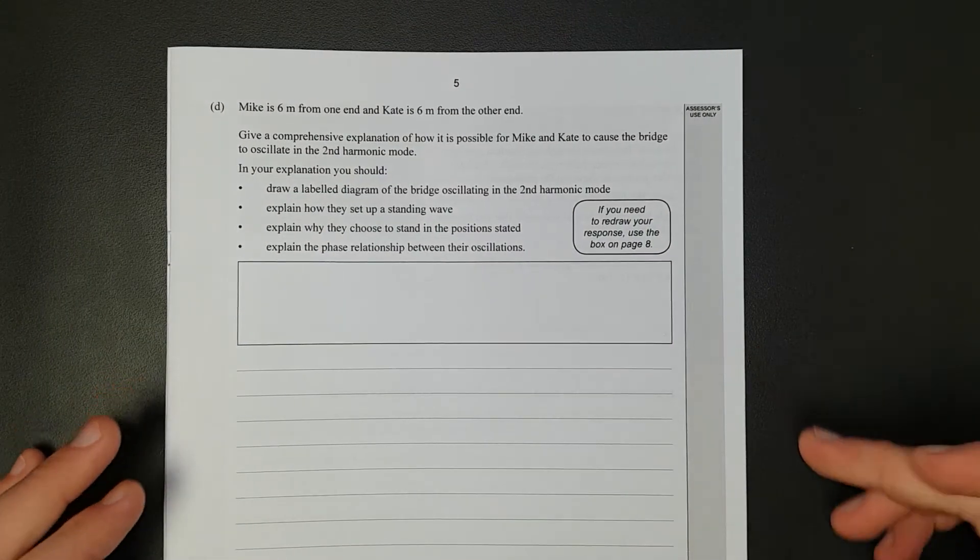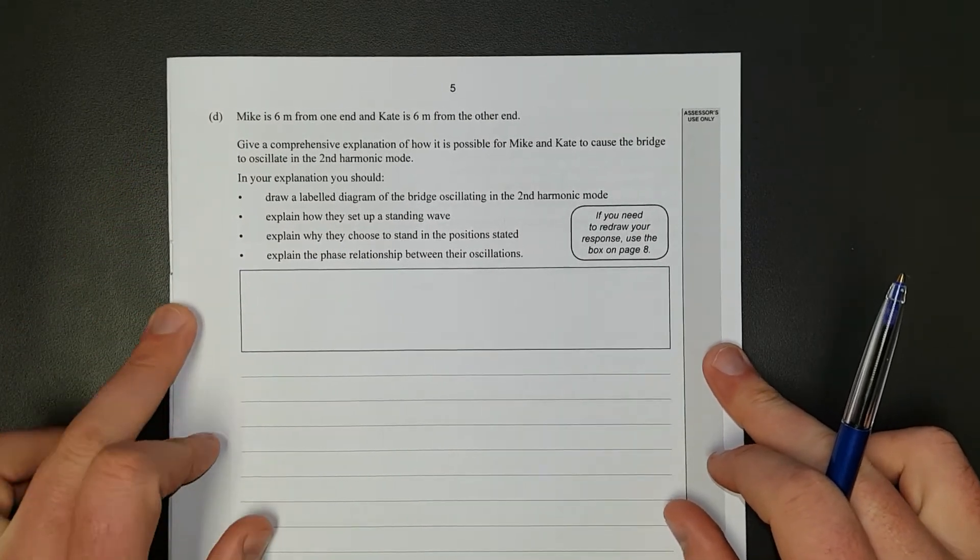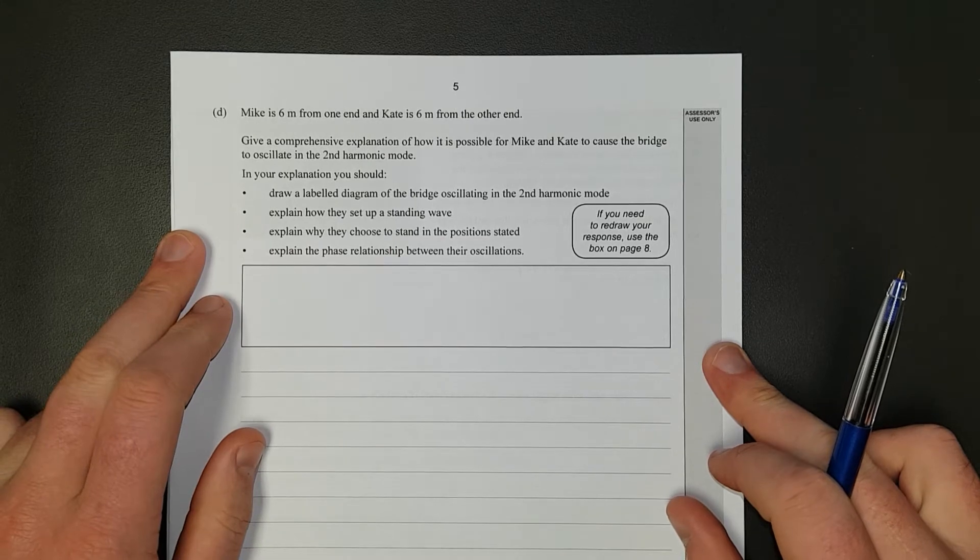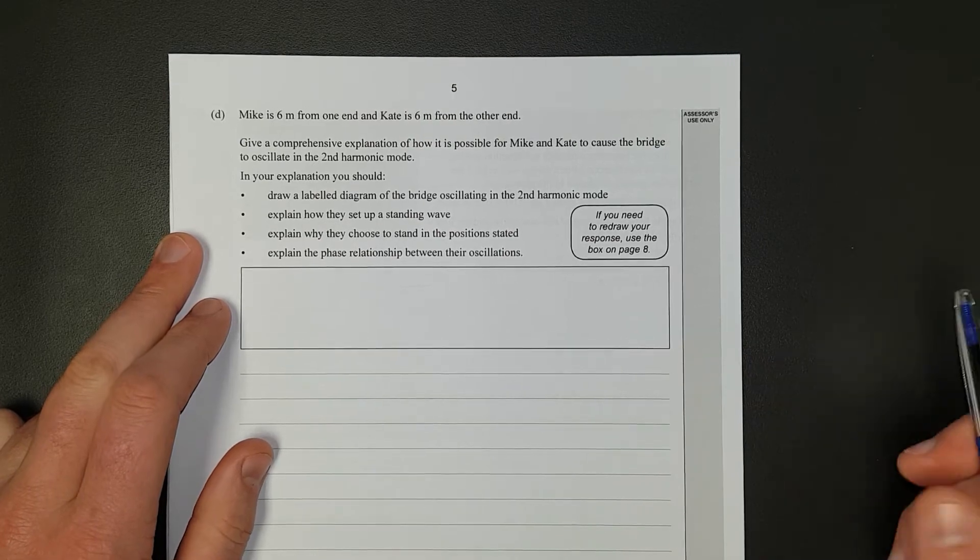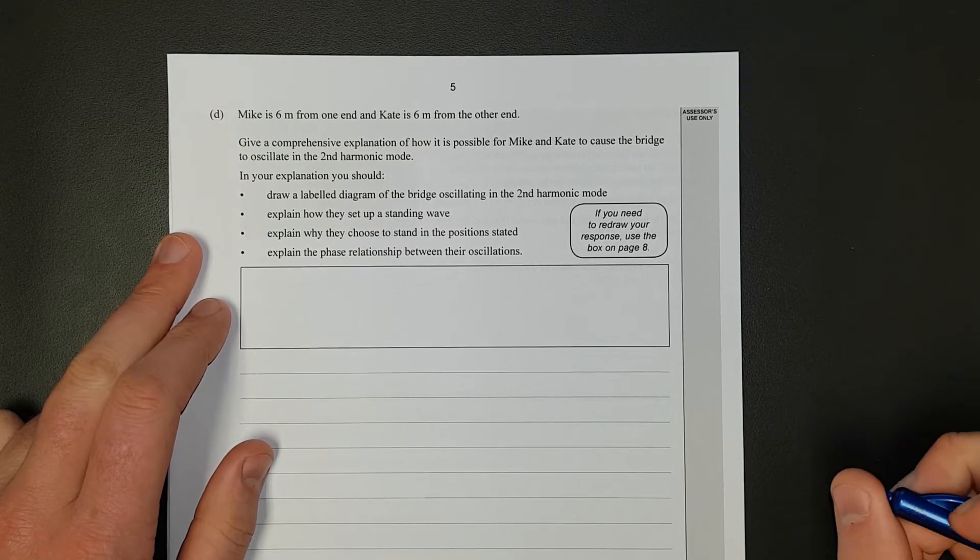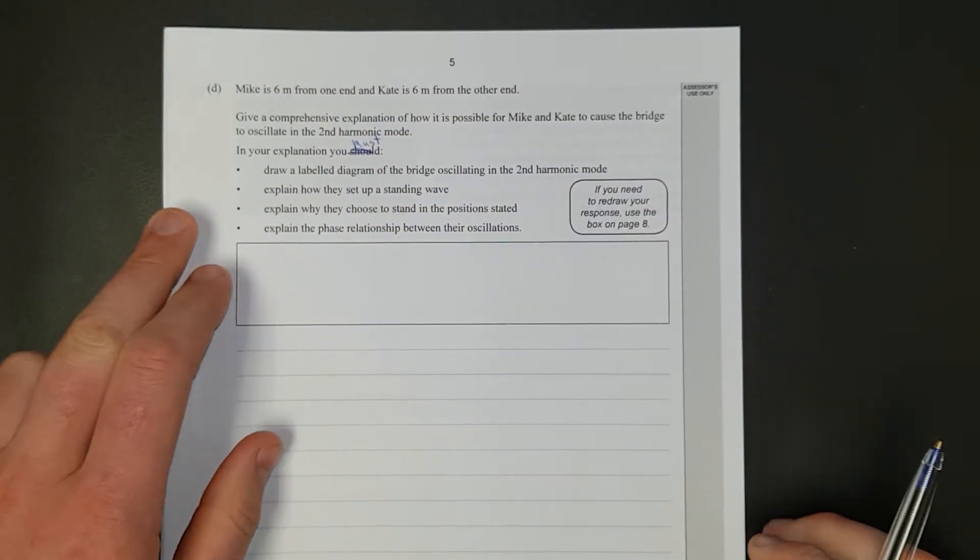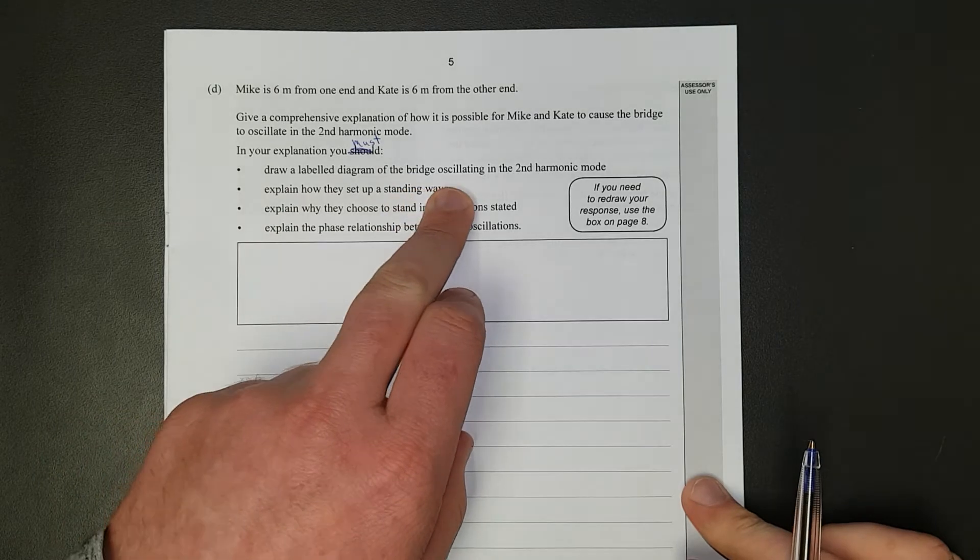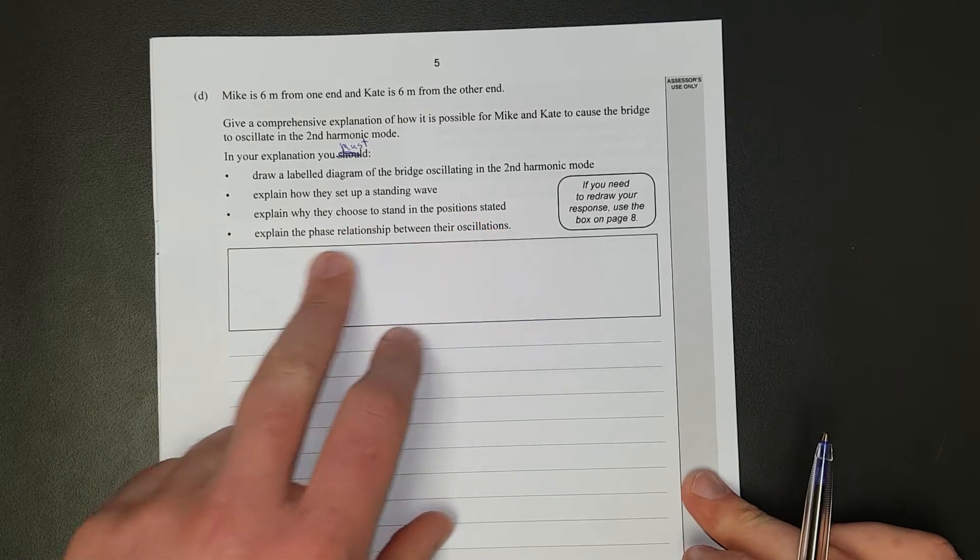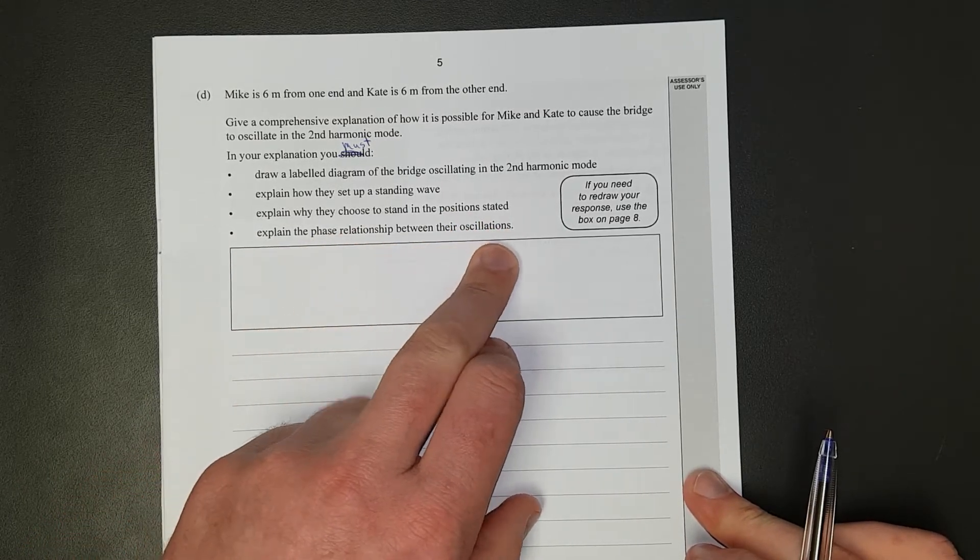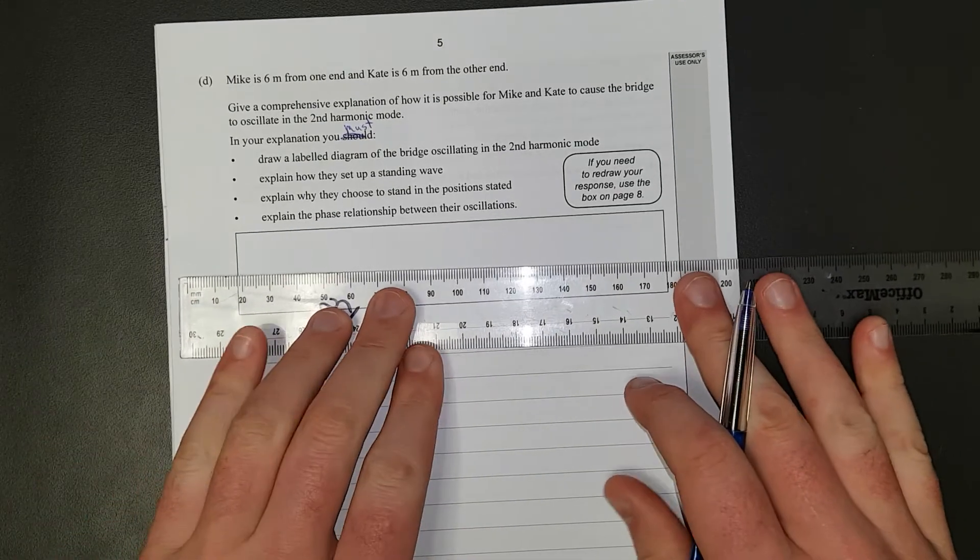Mike is 6 meters from one end. Kate is 6 meters from the other end of the bridge. Give a comprehensive explanation of how it is possible for Mike and Kate to cause the bridge to oscillate in the second harmonic mode. In your explanation, you should - let's cross this out - you must draw a label diagram of the bridge oscillating in the second harmonic mode. Explain how they set up a standing wave. Why they choose to stand at the position stated. Explain the phase relationship between the oscillations.